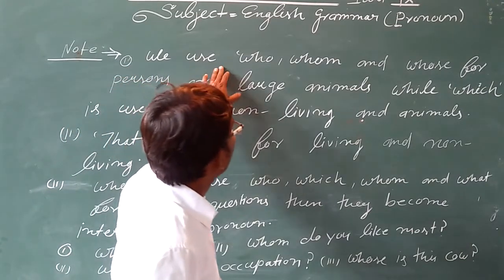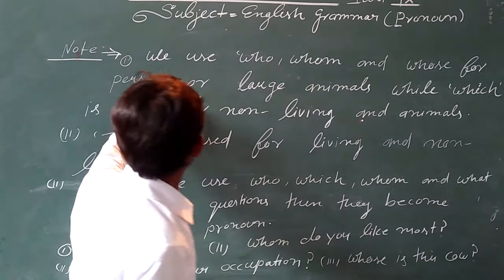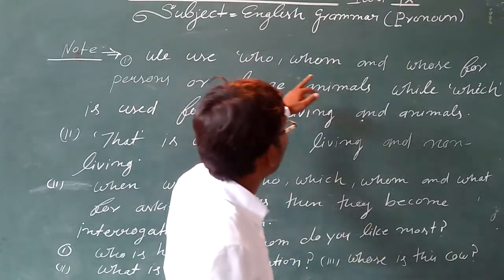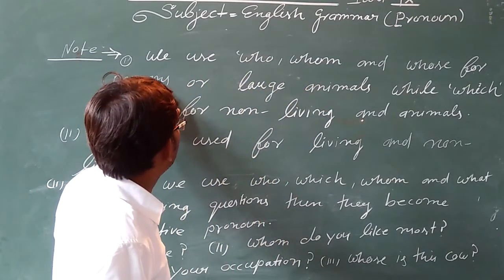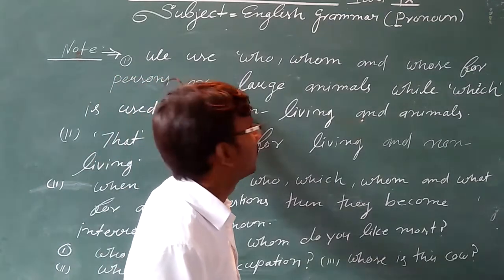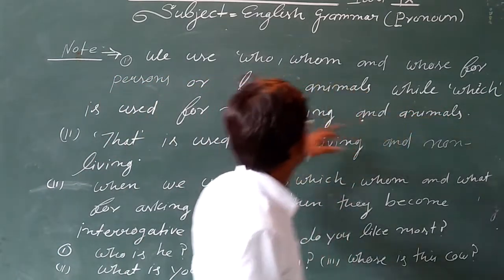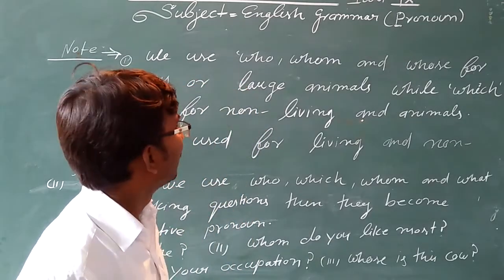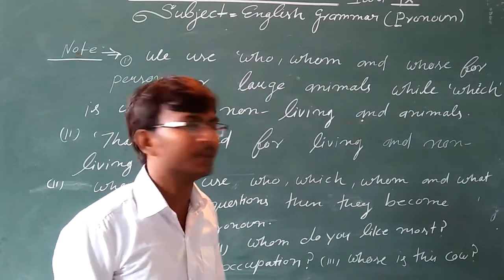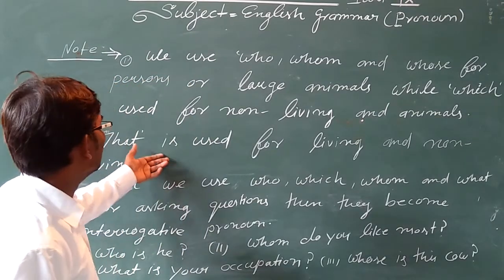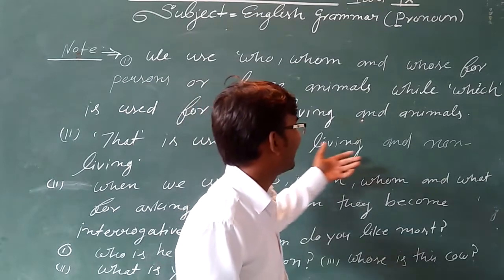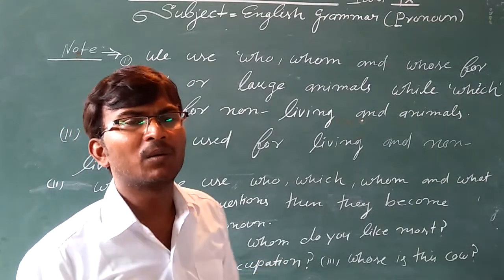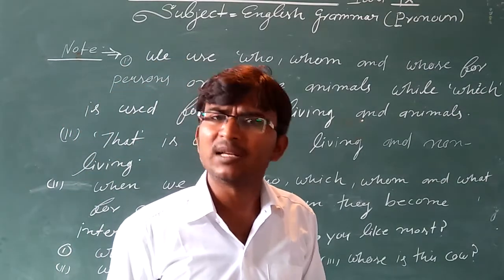We use who, whom, and whose for personal or large elements. Who, whom, and whose are for persons. While which is used for non-living things and animals. That is used for living and non-living things, both.